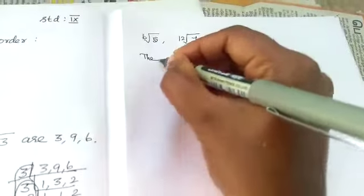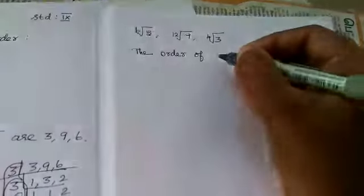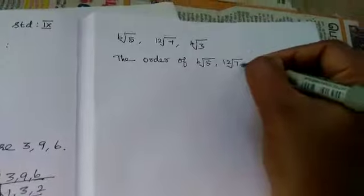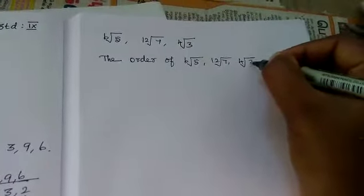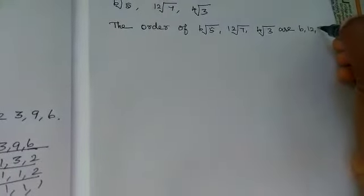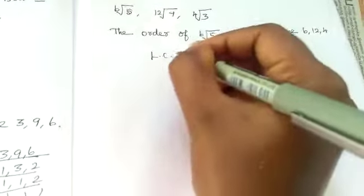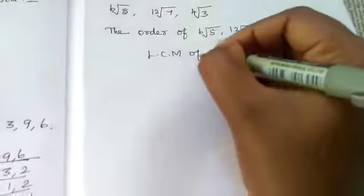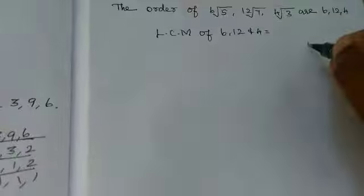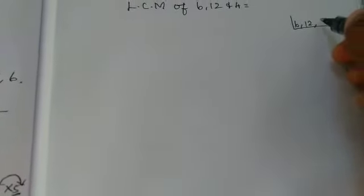Now, order of the surds are 6 root of 5, 12 root of 7, or 6, 12, 4. Now, we want to find what? LCM of 6, 12, and 4. Now, take LCM. 6, 12, 4. All are dependent on which table? 2 table. 3, 6, 12, 2.